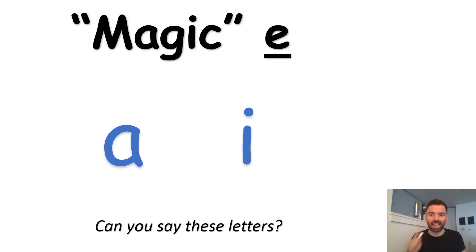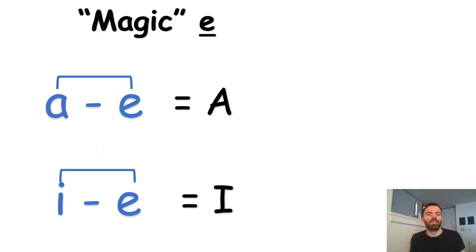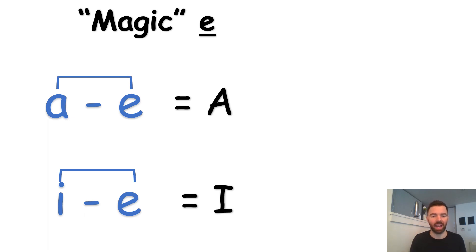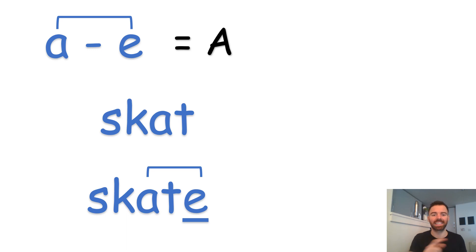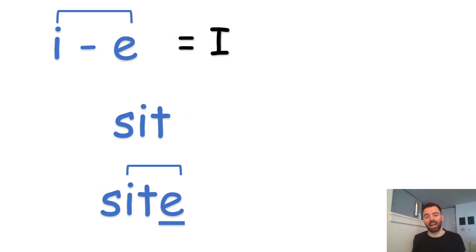We're looking at magic E — it's sometimes called magic E. It's a letter that appears at the end of words a lot. You'll see a lot of words with E at the end. The thing is, if there's an E after a vowel, it changes that sound so it becomes like the capital letter sound. So 'ah' with an E on the end becomes 'a', and 'eh' with an E on the end becomes 'i'. So 'ah' is A, 'eh' is I, 'o' would be O, and 'uh' would be U. For example, 'scat' with the magic E on the end becomes 'skate', and 'sit' with an E on the end becomes 'sight'.